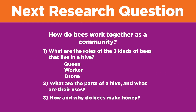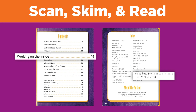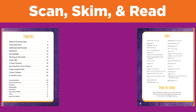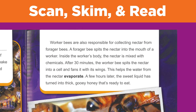Let's try to find answers for one of the other bee questions. We already found out about the queen bee's role in the hive, so let's investigate the role of the worker bee. You can use the table of contents or index to find information about worker bees, or flip through the pages and scan for relevant passages. Worker bees are responsible for collecting nectar from forager bees. A forager bee spits the nectar into the mouth of a worker. Inside the worker's body, the nectar is mixed with chemicals. After 30 minutes, the worker bee spits the nectar into a cell and fans it with its wings. This helps the water from the nectar evaporate. A few hours later, the sweet liquid has turned into thick, gooey honey that's ready to eat.